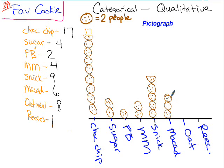Oatmeal, I'll draw 4 cookies: 1, 2, 3, 4. Notice I want to keep everything about the same size. The nice thing about a pictograph is you can get a pretty good idea of how everybody responded. Obviously, it looks like chocolate chip was the most popular choice — which makes perfect sense. We can use this to compare what exactly our poll provided.